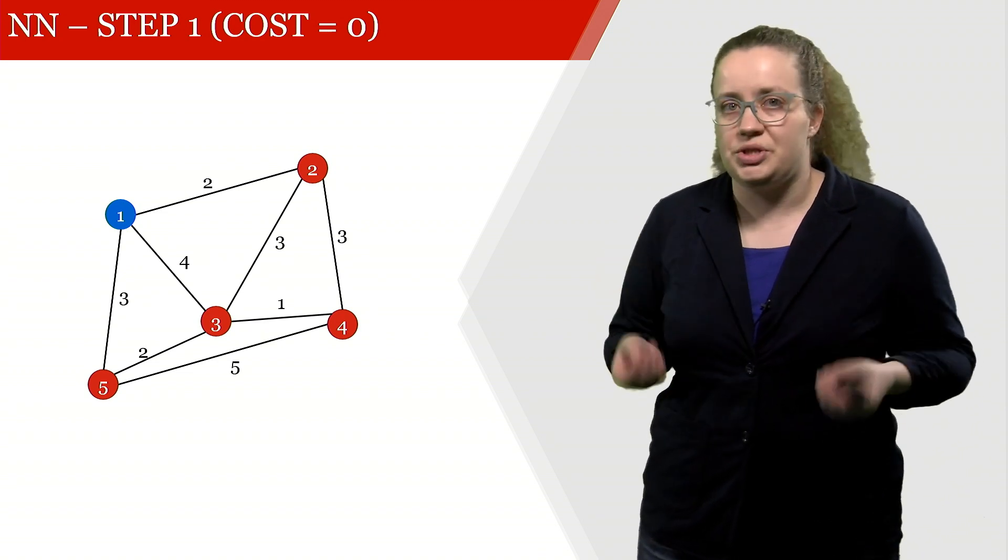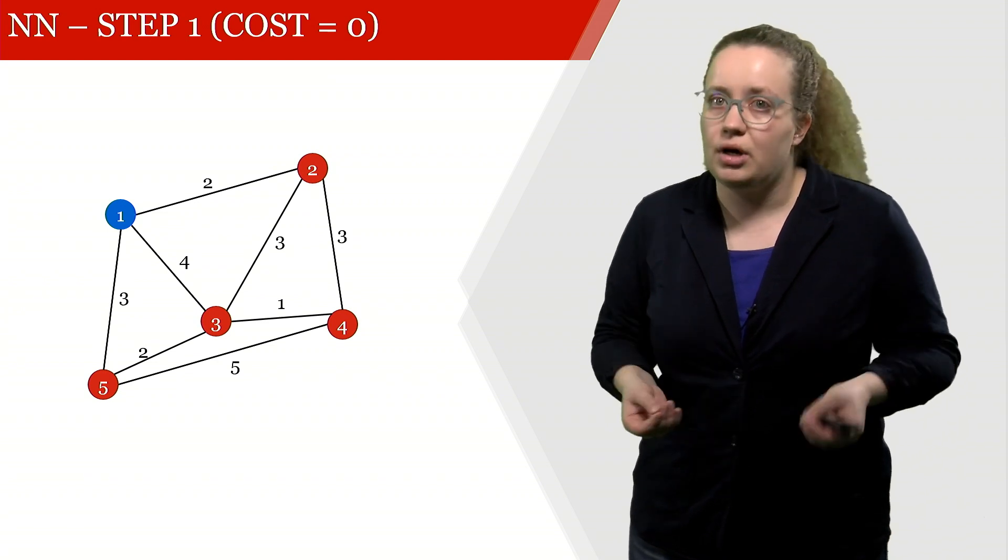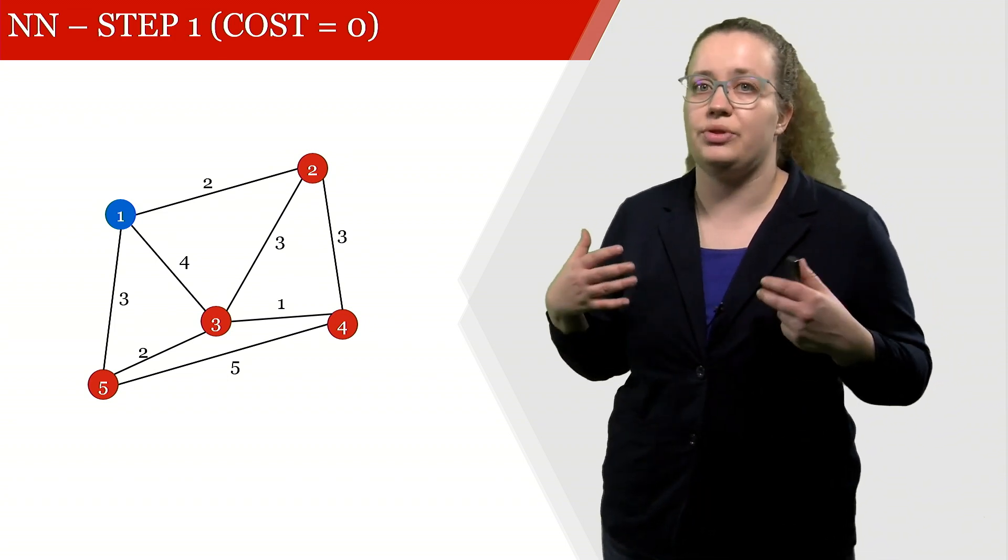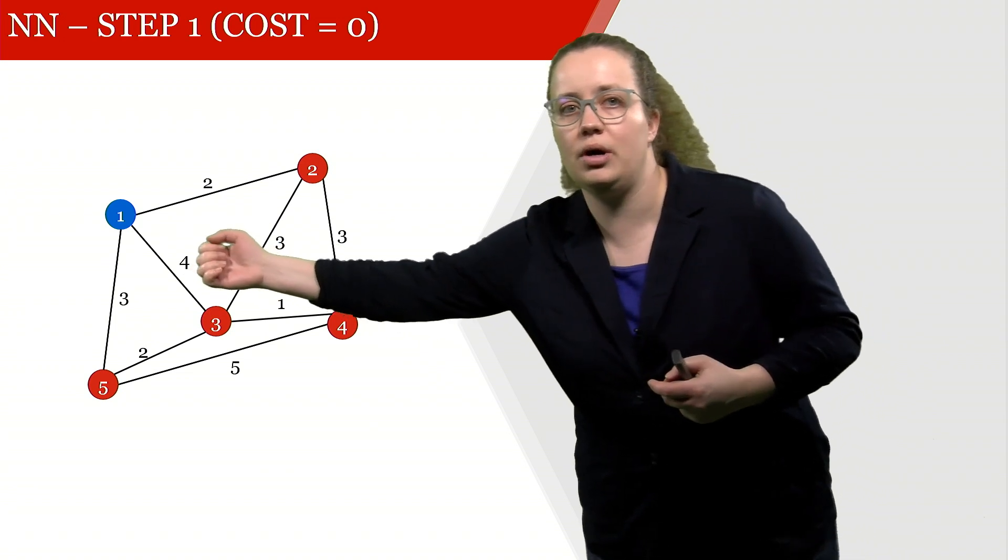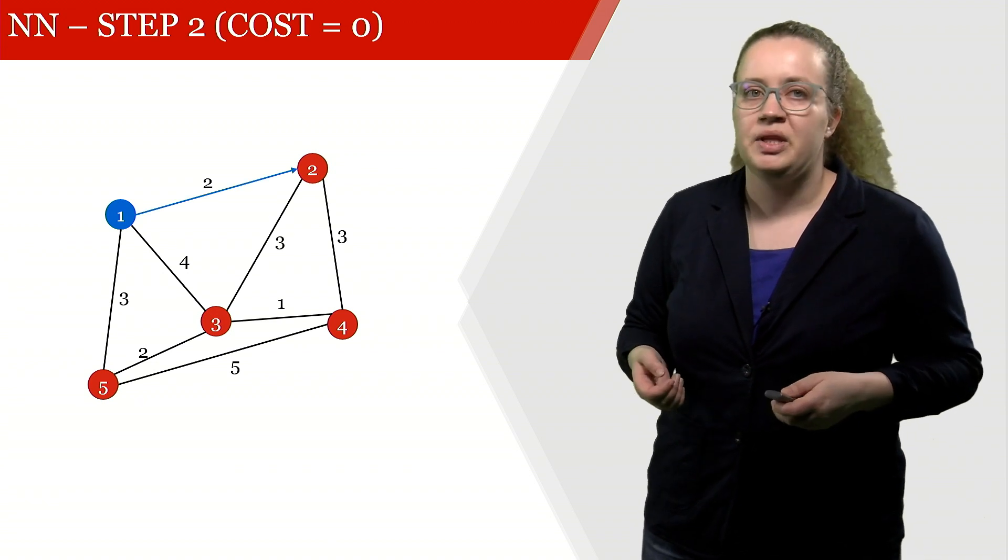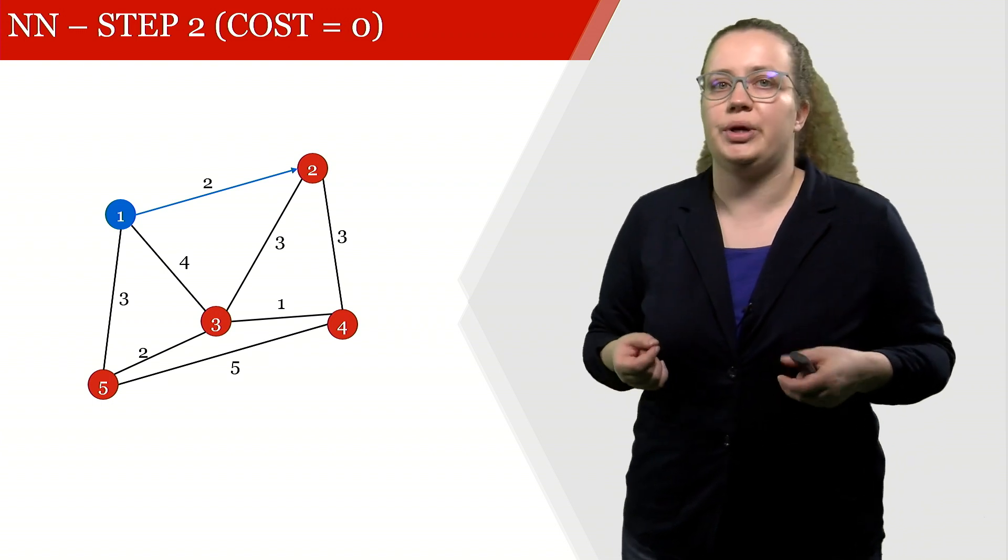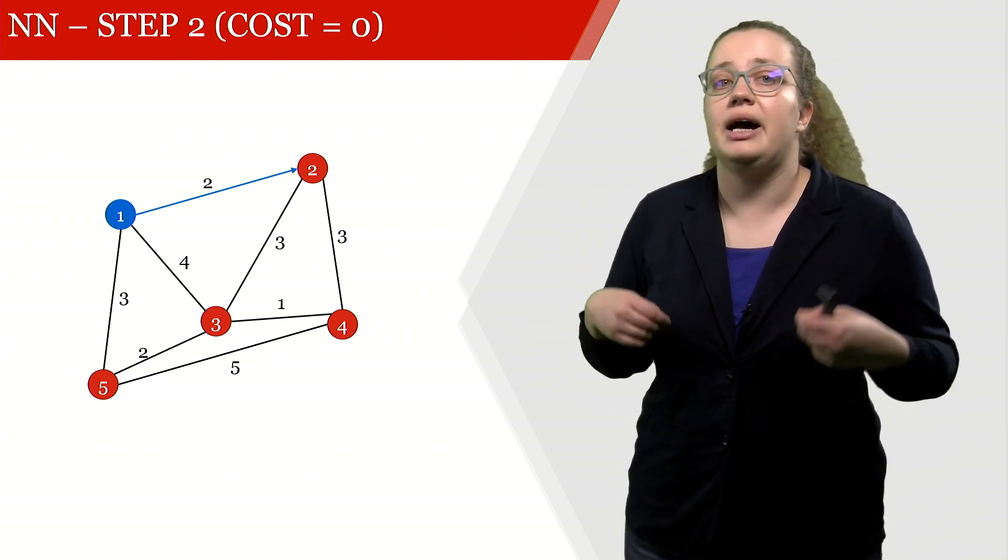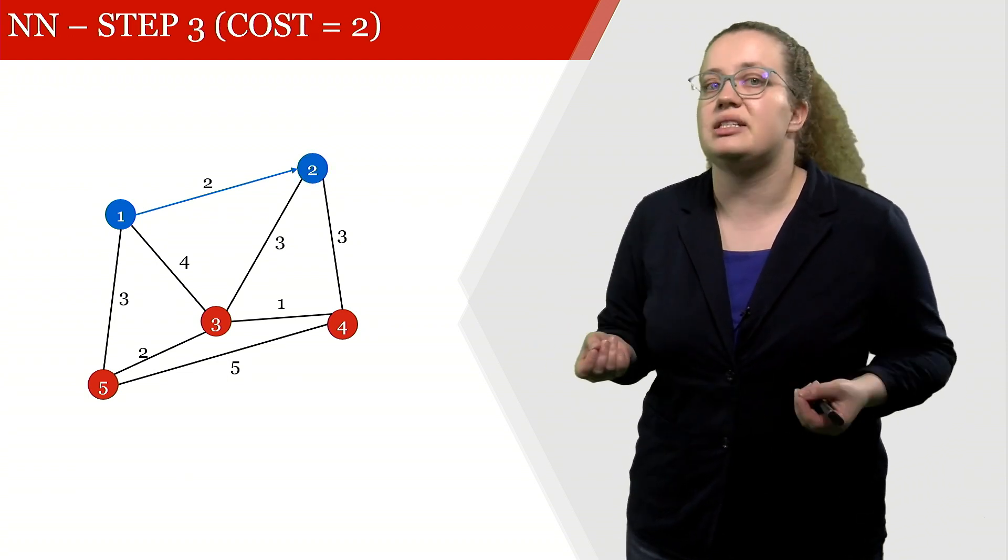In the first step, we're saying we're currently in node 1 and we have a cost of 0. In our second step, we're looking for the shortest or the closest next node. We're comparing this 2, this 4, and this 3 with each other, and we're moving to the node that is closest, which in this case is node 2. We're adding node 2 to our set of visited nodes and we're activating the arc from 1 to 2, and we're counting up the cost.